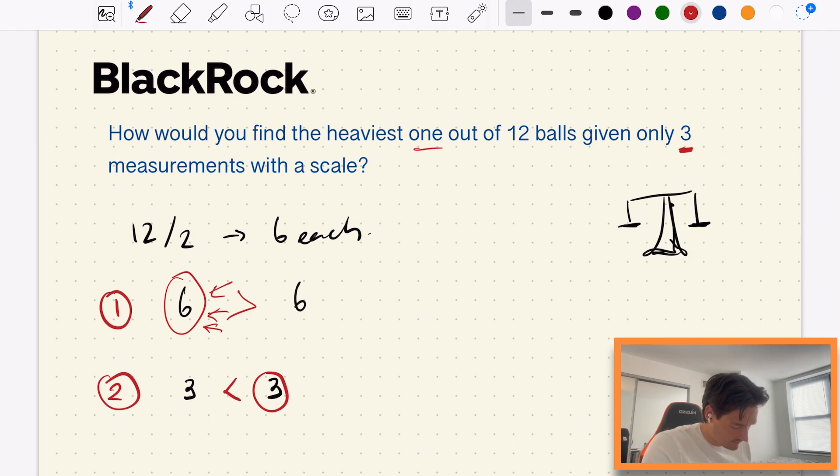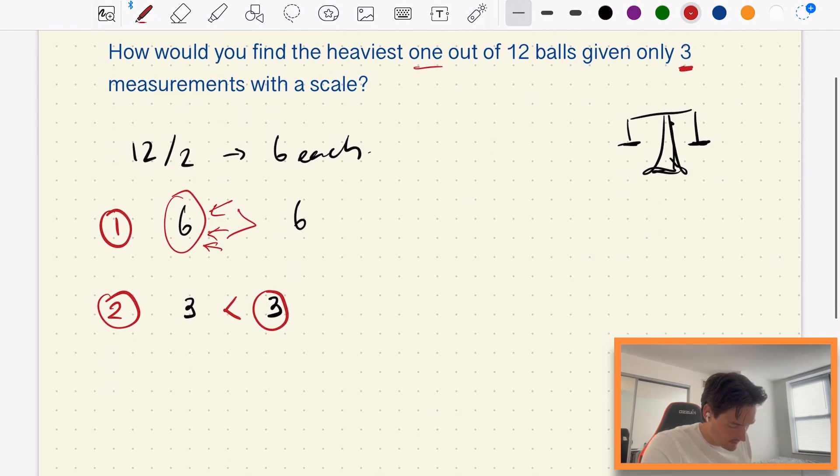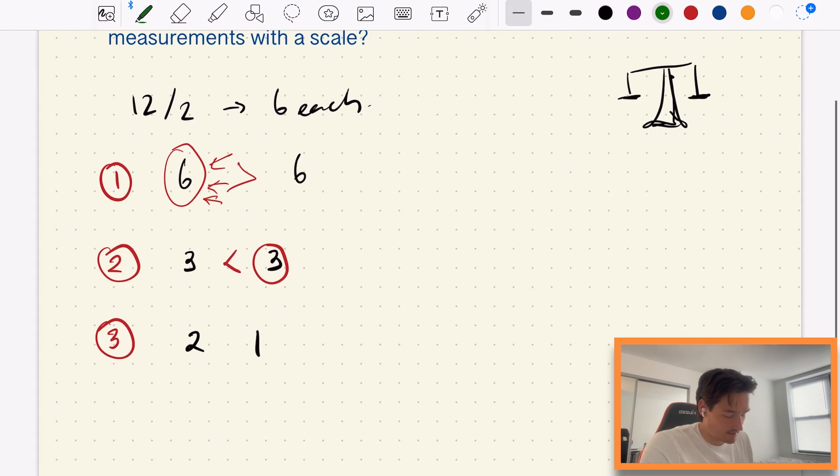So let's say this time it's this one. So that's two measurements. We have one more measurement left and we have an odd number of balls. So what we need to do now is split it, we need to get two balls of this three and leave one out.